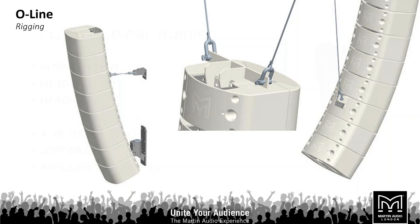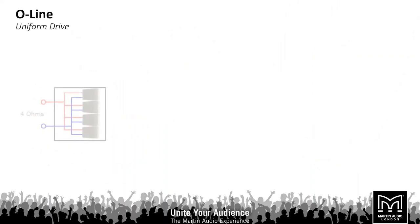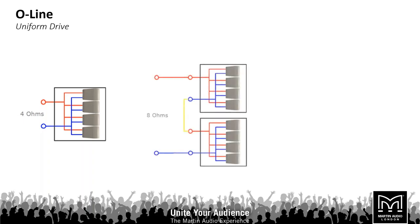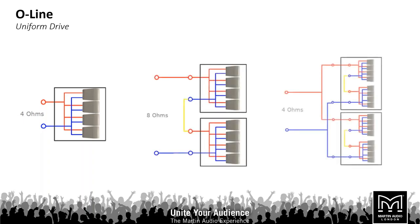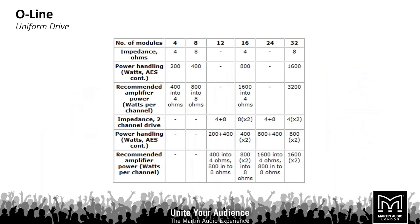We've talked about scalable resolution and the ability to run this system off one amplifier channel. Four modules are 16 ohms and they're paralleled together creating a four-ohm load, but we can link them in series-parallel and drive as many boxes as we like off a single amplifier channel. On our website and in the user guide there's a handy table with recommended power-handling requirements for varying size arrays.